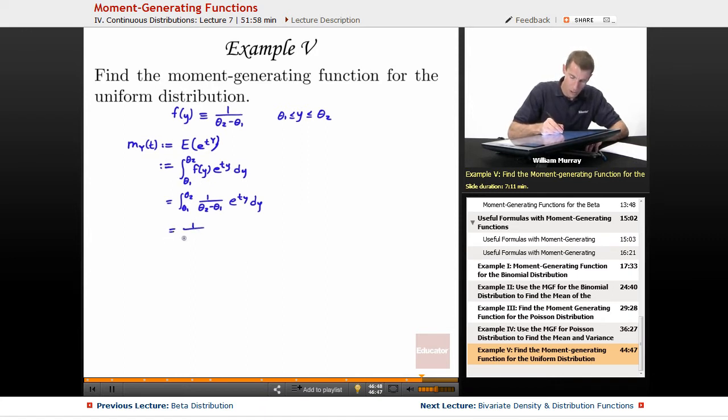The answer is 1 over theta 2 minus theta 1, that's a constant so I can pull it out. Now what's the integral of e to the ty? Remember here, our variable is y, we're integrating with respect to y. And so the integral of e to the ty, if you do a little substitution there, I'm going to go ahead and do it in my head. It's just e to the ty times 1 over t. That's because we're thinking of t as being constant here, y is the variable of integration.